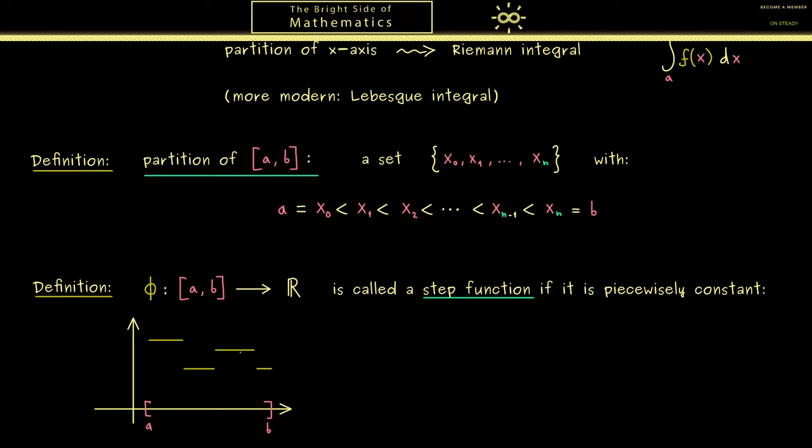Maybe it's also important to note here that the values at the jump points don't matter at all. For example, this is allowed to happen. And maybe you already know why this is - because the area below this graph to the x-axis does not care what this value is. And of course in the end we will be interested in this area because it's the integral.